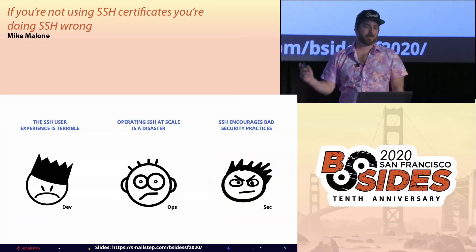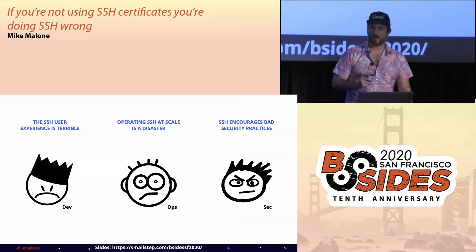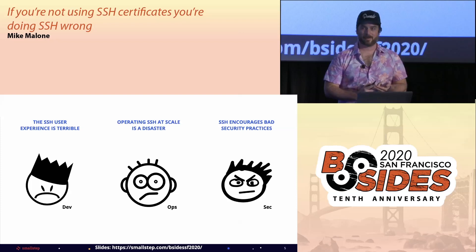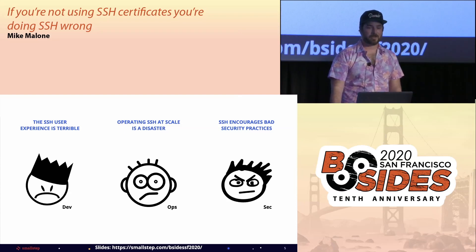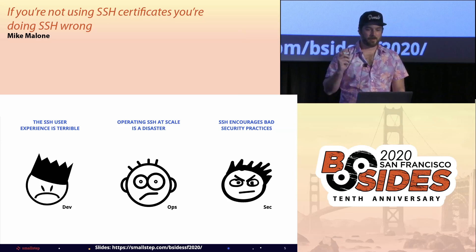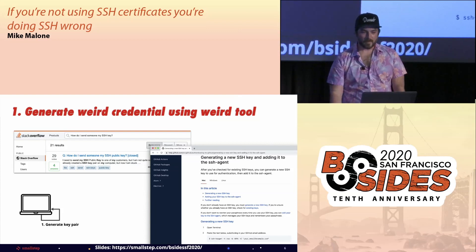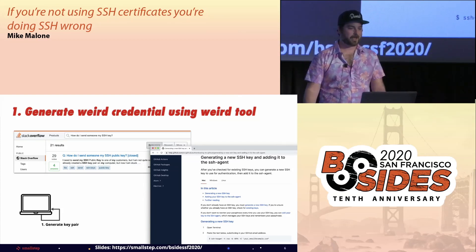Back to our monster. To put it bluntly, typical SSH deployments suck for pretty much everyone involved. SSH user experience is terrible. Operating SSH at scale is a disaster. And SSH encourages bad security practices. Most people probably haven't given SSH enough thought to form an opinion about this. Allow me to elaborate by walking through a typical new user experience for SSH. Imagine you've just joined a new company. You've got a brand new laptop and you're trying to get SSH access.